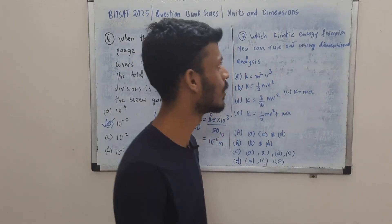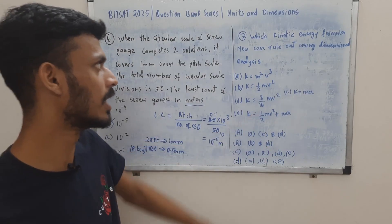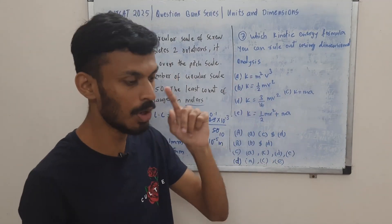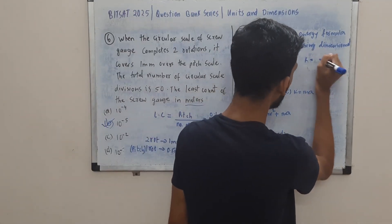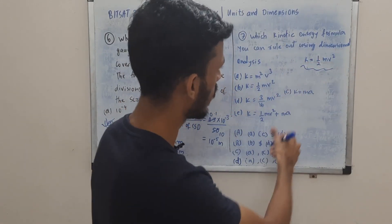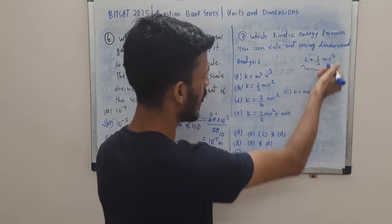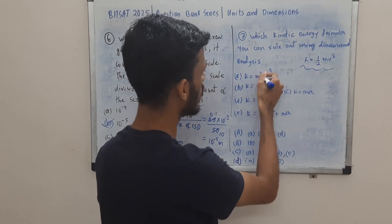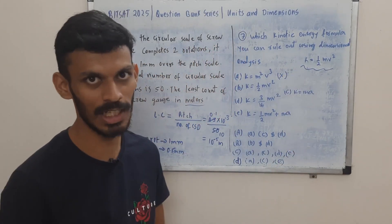Question 7: we are supposed to rule out expressions of kinetic energy that are dimensionally incorrect. We use dimensional analysis — basically, check if the expression matches the form ½mv² (dimension ML²T⁻²). The first expression is m²v³: not of the form mv², so dimensionally incorrect.